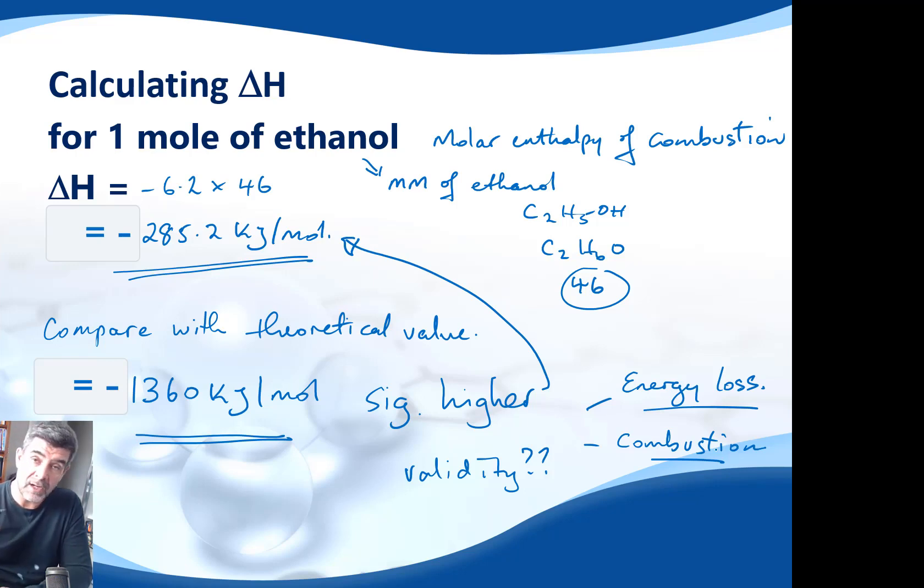That is likewise going to affect our value and again in the same sort of direction. So energy loss is going to mean we're not going to collect as much energy as we would expect. So that's going to drop our value. Incomplete combustion may also mean that we have less energy than we would otherwise have for complete combustion. So combined together, these sorts of things can significantly lower the value that we expect to get theoretically when we do it experimentally.